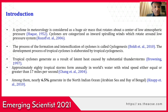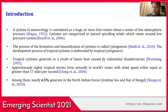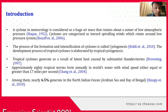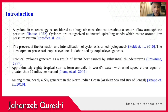The development process of tropical cyclone is elaborated by tropical cyclogenesis. Tropical cyclones generate as a result of latent heat caused by substantial thunderstorms. Approximately 80 tropical cyclones form annually in world waters with wind speed equal to or greater than 17 meters per second. Among them, nearly 65 percent of cyclones are generated in the Northern Indian Ocean, Arabian Sea, and Bay of Bengal.